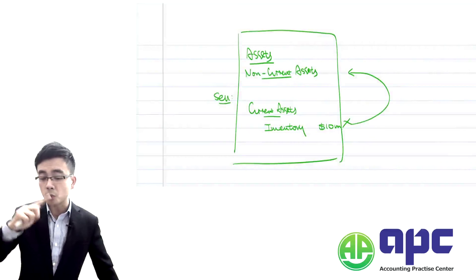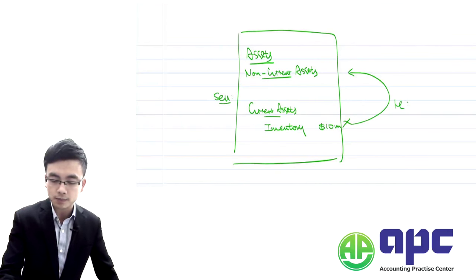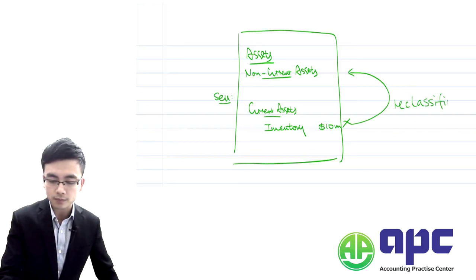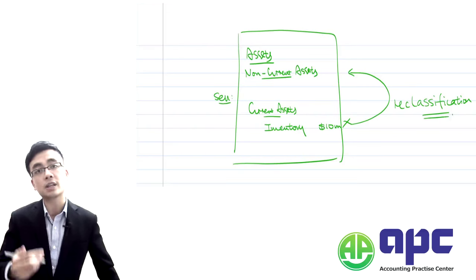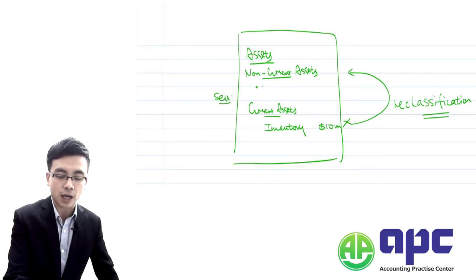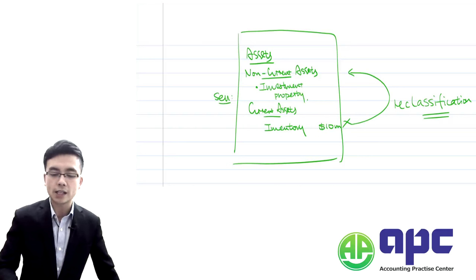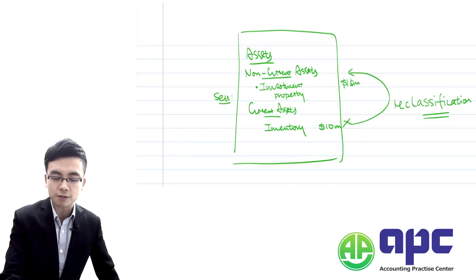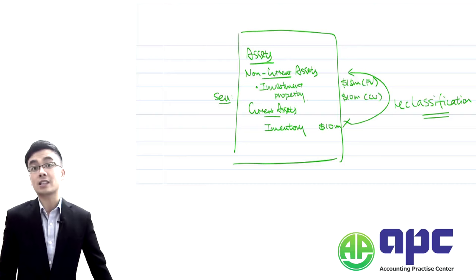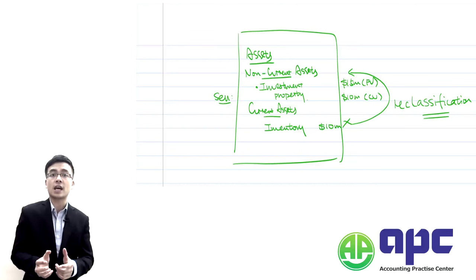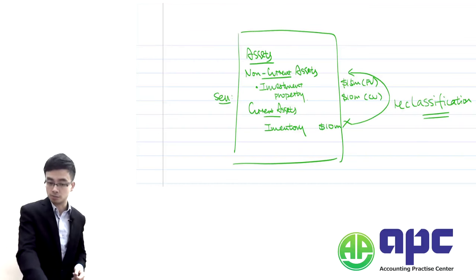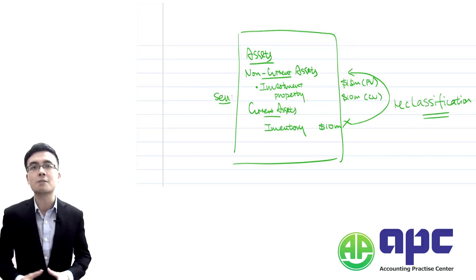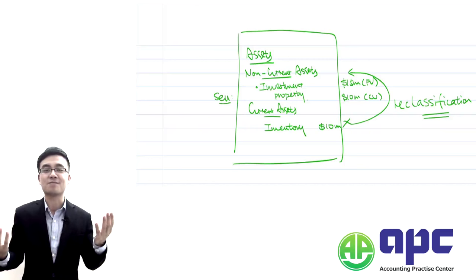Here's the question: if you decide to reclassify your investment property from inventory to non-current asset called investment property, do you put $15 million as the fair value, or $10 million as the carrying value — the book value that has already been recorded? Either 15 or 10 — A or B, what do you think?